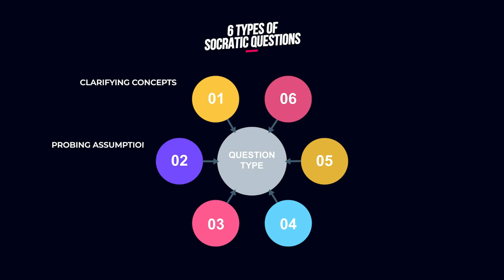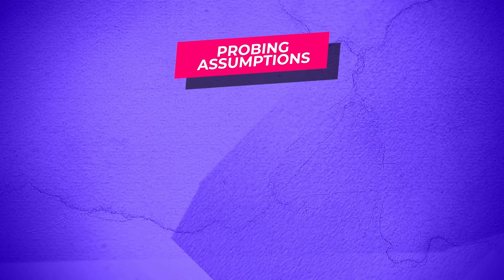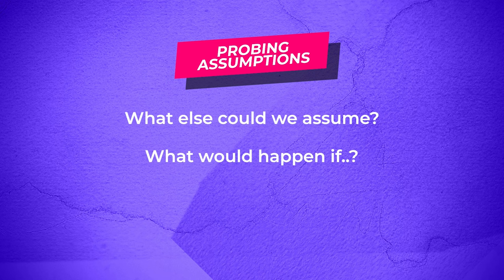The second type is probing assumptions. These questions make students think about the presuppositions and unquestioned beliefs on which they are founding their arguments — with questions such as: What else could we assume? And What would happen if?